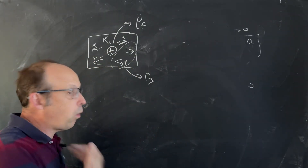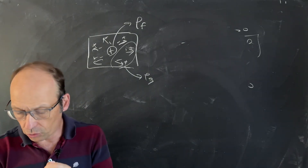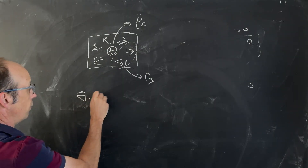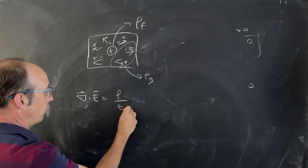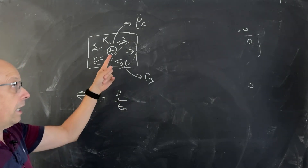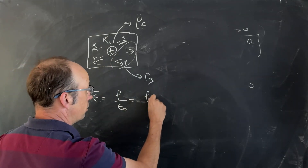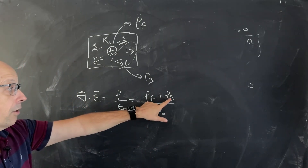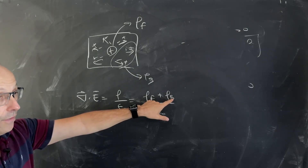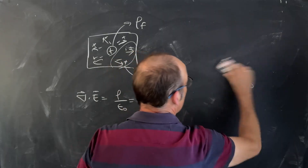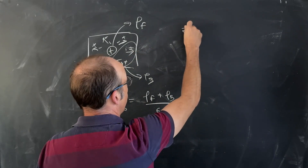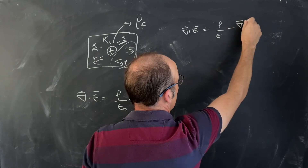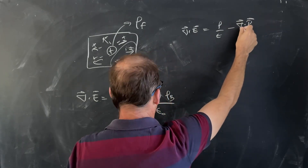So that's bound versus free. Now let's go back to Gauss's law. Gauss's law looks like this: the divergence of the electric field is the charge density over ε₀. We have two kinds of charge — bound and free — so let's put in free charge plus bound charge over ε₀. We can say the bound charge is negative the divergence of the polarization. So with that, we get ∇·E equals the free charge over ε₀ minus the divergence of the polarization over ε₀.